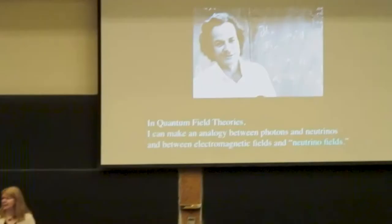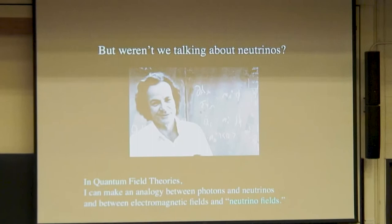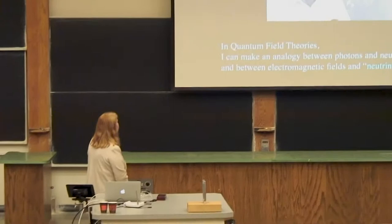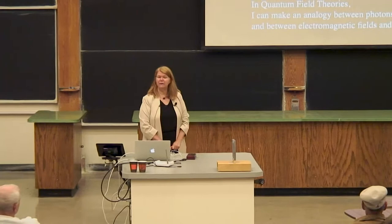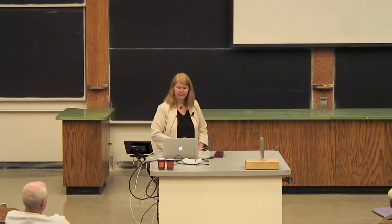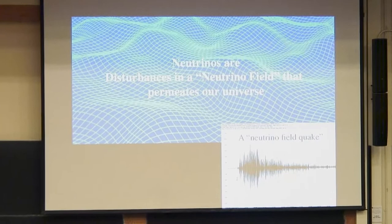You might be wondering — weren't we talking about neutrinos? The reason for this wave discussion is that in quantum field theories, I can make an analogy between photons and neutrinos, and between electromagnetic fields and neutrino fields. So neutrinos are disturbances in a neutrino field that permeates our universe — that's what the neutrino is that is actually interacting in my detector. The thing that's happening in my detector I like to think of as a little neutrino quake.